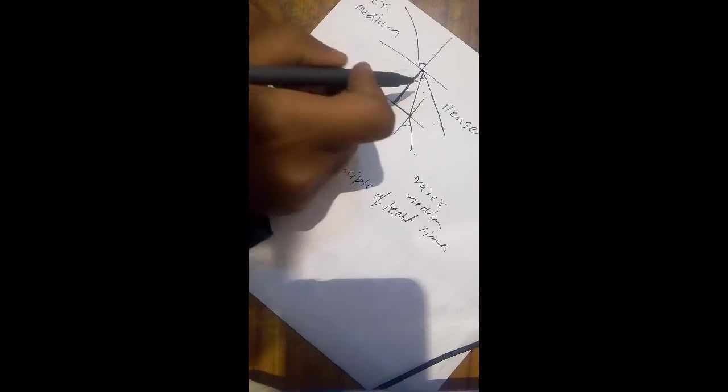Light is in a hurry means light wants to take the quickest path. In this rare medium, the speed of light gets slowed down. And if light continues its original path, it will take more time because the speed of light gets slowed. It will take more time to travel from this point to this interface.